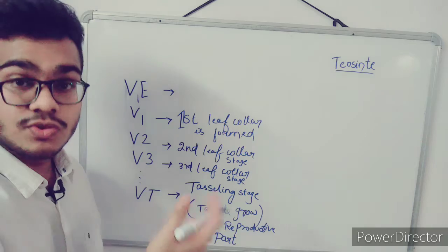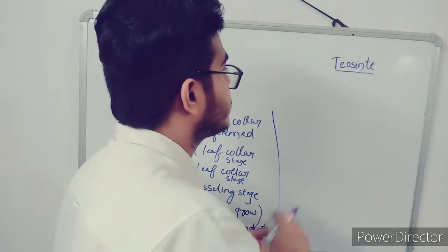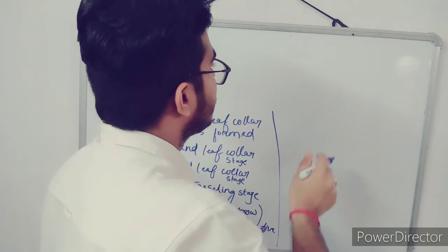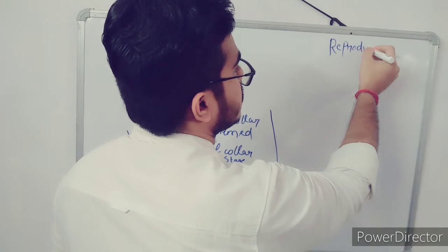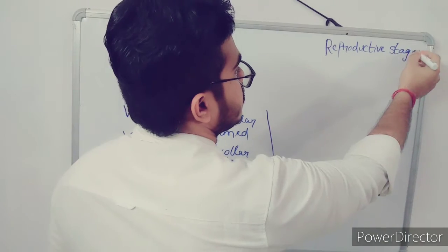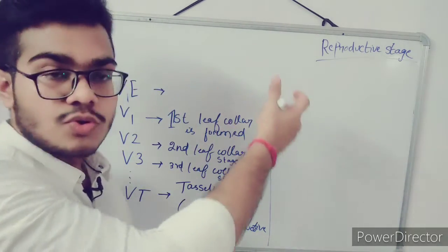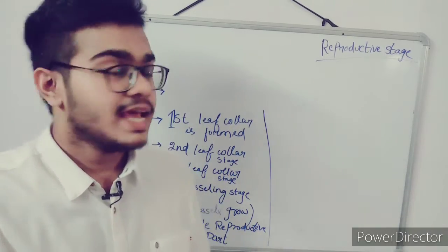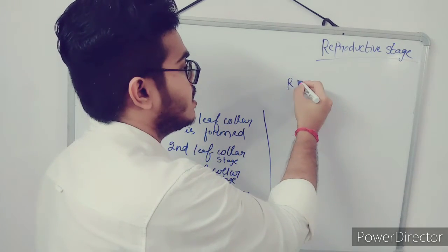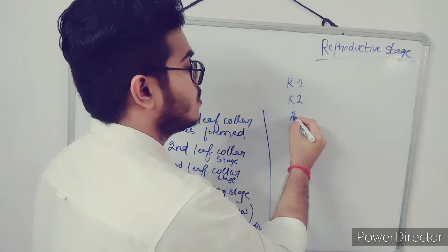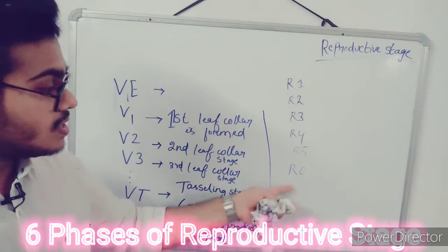The vegetative stage generally takes about 30 to 40 days to complete. After the tassels arise in the plant, the reproductive stage starts. The reproductive stage is of six types: R1, R2, R3, R4, R5, and R6.